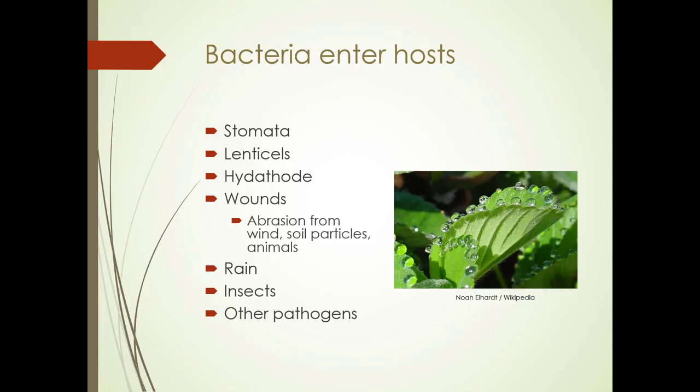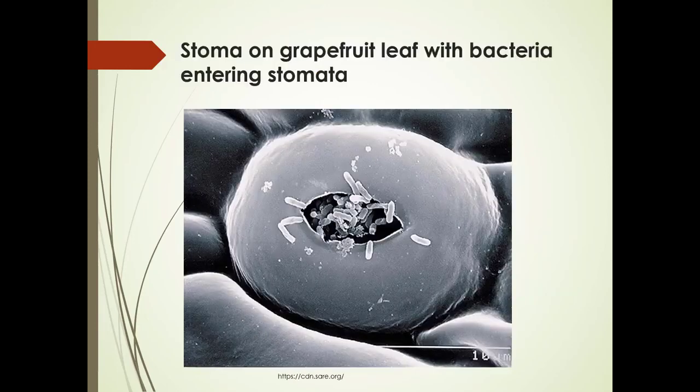Additional entry points include pruning, animals, rain, insects, and other pathogens. Here's a closeup on the stoma of a grapefruit leaf with bacteria entering the stoma, and you can see they're very tiny.